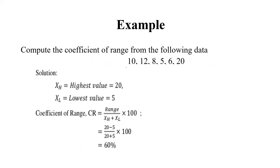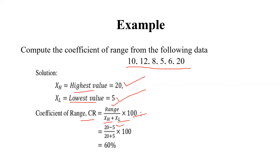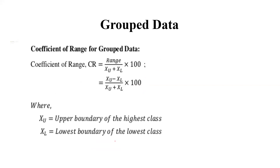Suppose this data set is given. First step: we arrange it in ascending or descending order. Then we find out the highest value in the given data set, which is 20, and the lowest value, which is 5. Then we write the coefficient of range formula: range divided by (highest value plus lowest value), multiplied by 100. We put the values in and calculate — and the result is 60%, which is the coefficient of range.